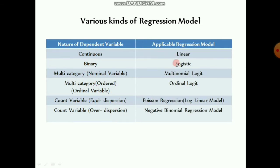To summarize the regression model selection framework: if the dependent variable is continuous, apply linear regression (OLS); if binary, apply logistic regression; if multi-category nominal, apply multinomial logit; if multi-category ordered, apply ordinal logit. For count data, if mean and variance are equal (equidispersion), apply Poisson regression or log-linear model. If the count variable shows over-dispersion, apply the negative binomial regression model.